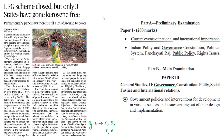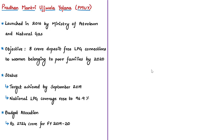The next news article is about a report given by the Parliamentary Standing Committee on Petroleum and Natural Gas about the Pradhan Mantri Ujwala Yojana. Let us look briefly at this scheme. It was launched in the year 2016 under the Union Ministry of Petroleum and Natural Gas. The objective of this scheme is to provide clean cooking fuel to poor households in the country.